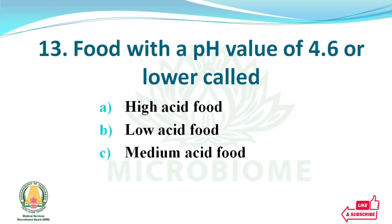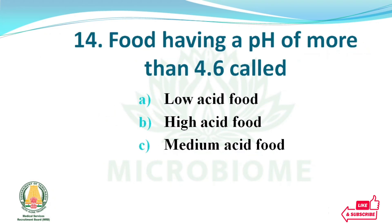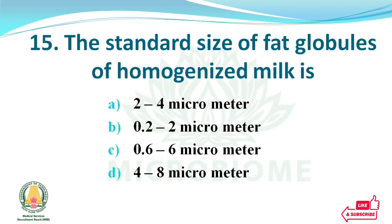Food with a pH value of 4.6 or lower is called — options: high acid food, low acid food, medium acid food. The right answer: option A, high acid food. Food having a pH of more than 4.6 is called — options: low acid food, high acid food, medium acid food. The right answer: option A, low acid food.